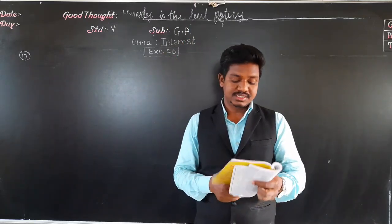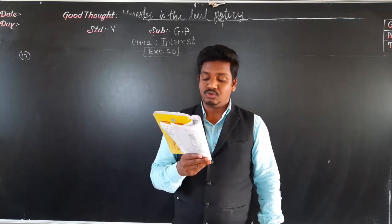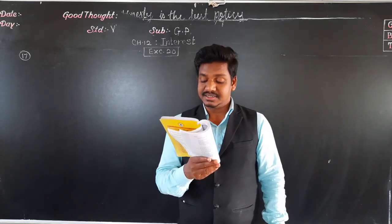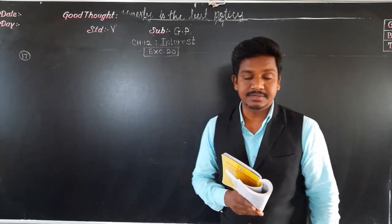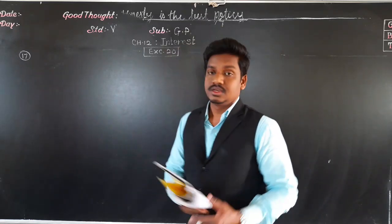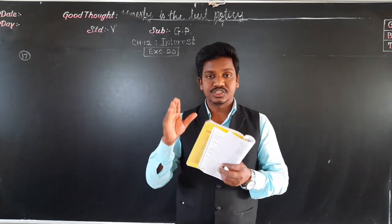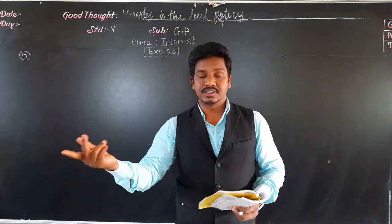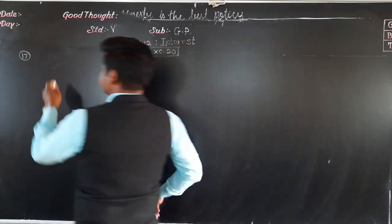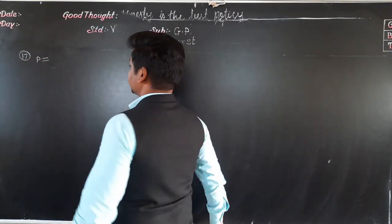Example number 70. Find the amount of rupees 1500 in 3 years at 5% per annum. In this problem, we have to find the amount which has to be repaid after 3 years. The principal — the loan taken — is rupees 1500.